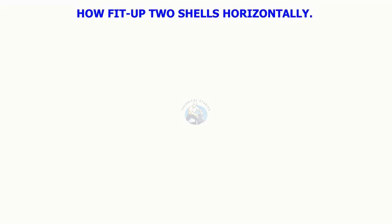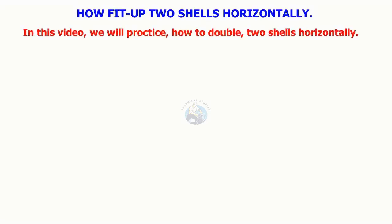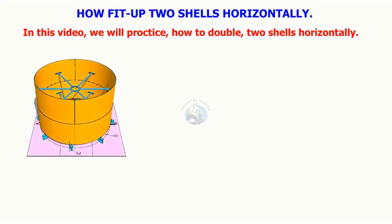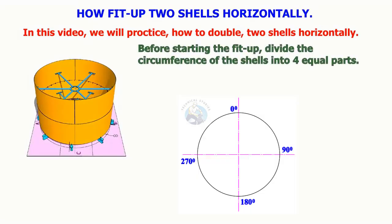Before starting the fit up, divide the circumference of both shells into four equal parts and mark 0 degree, 90 degree, 180 degree and 270 degree.